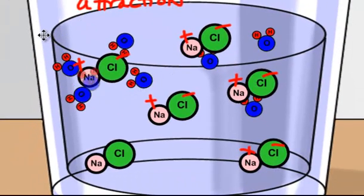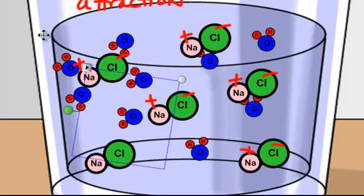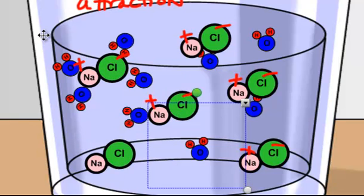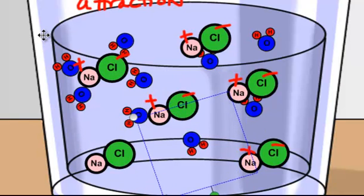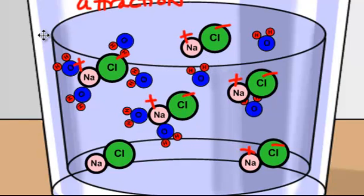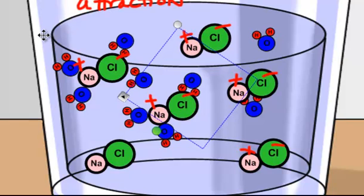I put a couple more water molecules in here. You notice that they rotate themselves, and they're going to get close to the sodium. The oxygen is going to get close because it's a negative and sodium is a positive. This water molecule right here will orientate itself. The hydrogens will again get closer to chlorine.